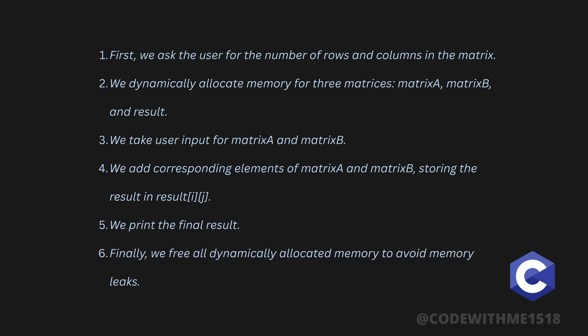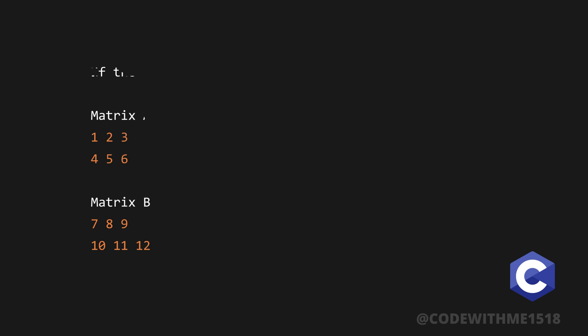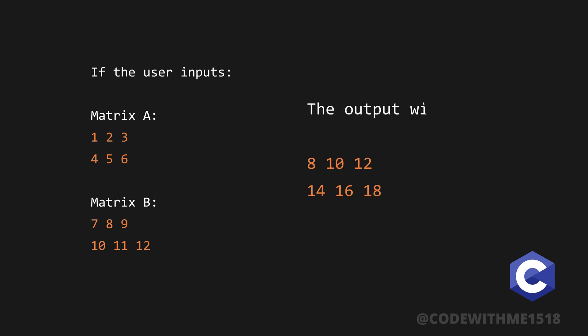Let's see an example. If the user inputs matrix A as 1, 2, 3, 4, 5, 6 and matrix B as 7, 8, 9, 10, 11, 12, the output will be 8, 10, 12, 14, 16, 18. And that's it.